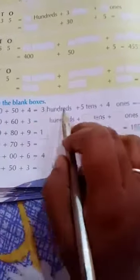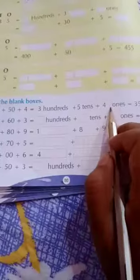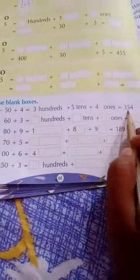Fill in the blank boxes. 300 plus 50 plus 4 is equal to 3 hundreds plus 5 tens plus 4 ones is equal to 354.